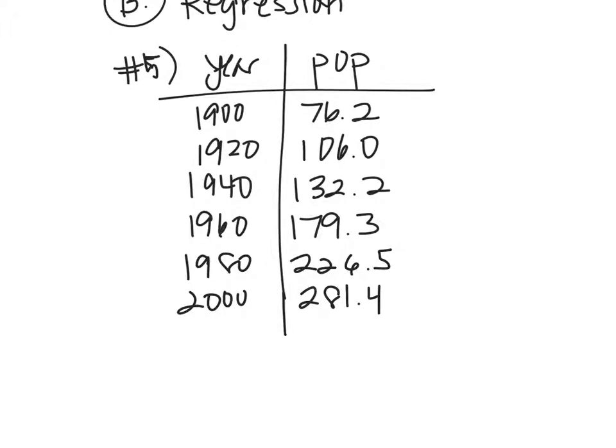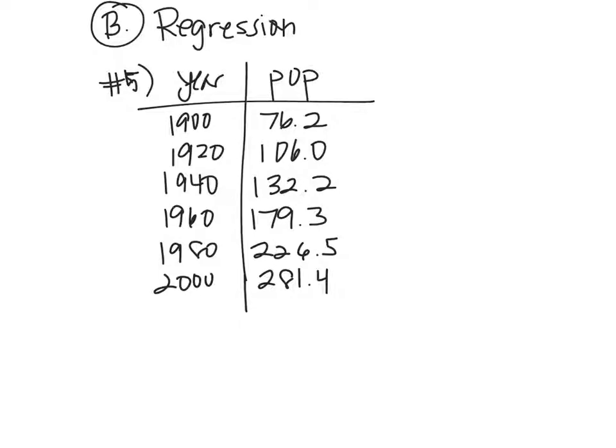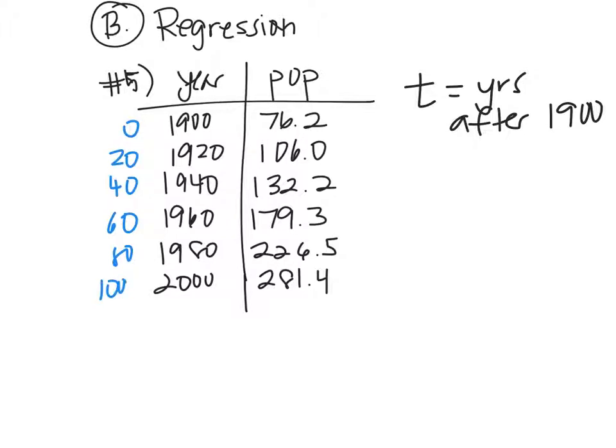What we're going to do is we're going to go to our calculator. They gave you all of them from 10, 20, 30. I just skipped and just did 20, 40, 60, 80. And they want you to let T be the years after 1900. T equals the years after 1900. They don't want you plugging in 1900, 1920. They would want you to plug in 0, 20, 40, 60, 80, and 100. So just be aware of that. They'll say that in your homework too. Just be careful.